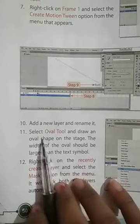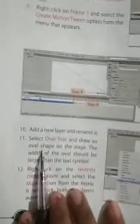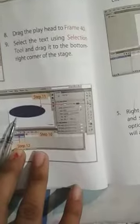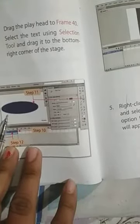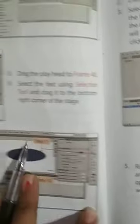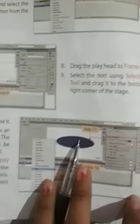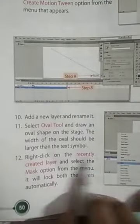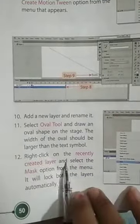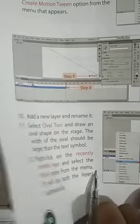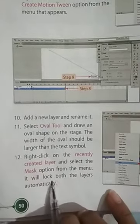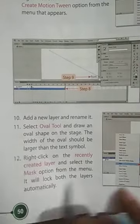Select the oval tool and draw an oval shape on the stage. The width of the oval should be larger than the text symbol. This is the eleventh step. Right-click on the recently created layer and select the mask option from the menu. It will lock both the layers automatically.